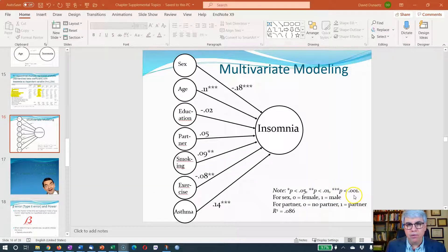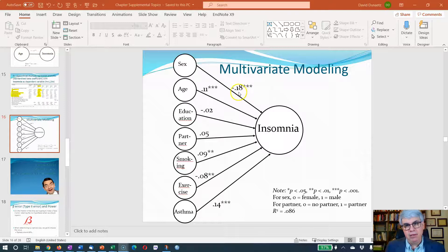We have sex, age, education, whether somebody has a partner, smoking, exercise, and then asthma. So basically what we could be asking is does asthma contribute to insomnia beyond all these other variables that we know have a history of contributing to insomnia?